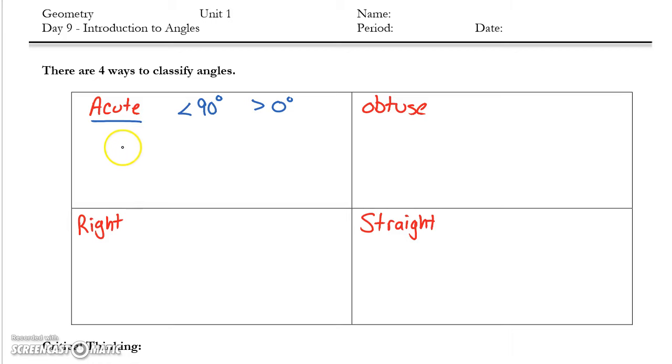Often times we will write that as either a compound inequality or we'll write two separate inequalities that way. This would be considered an acute angle as this angle measures, for example, let's say it measures 55 degrees.